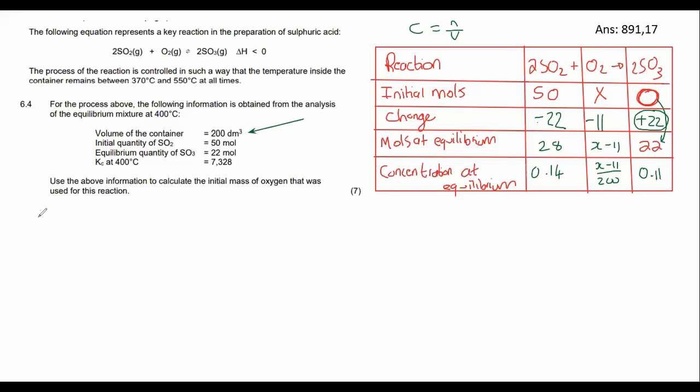Now we can use the Kc formula. Remember that Kc is products over reactants. Another thing to remember is that in the Kc calculation, we only use aqueous and gas. We do not use liquid or solid. We don't use those in the Kc calculation. So if we have a quick little scan up here at the top, we can see we've got gas, gas, and gas. So we're good to go. We can use all of them in our Kc calculation. Don't say I didn't warn you about that one. That can catch you out.